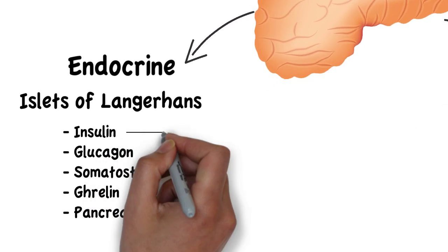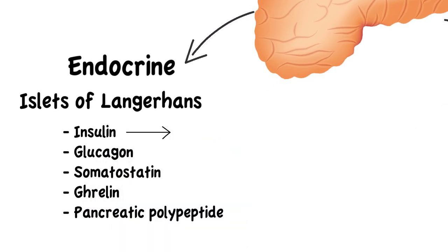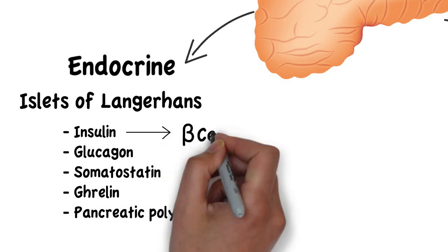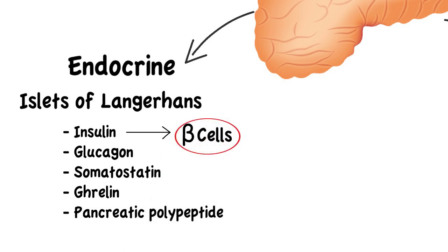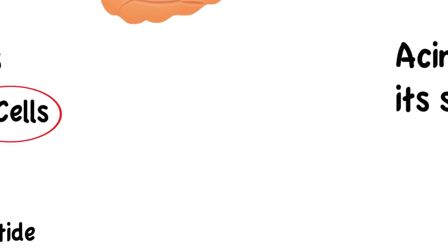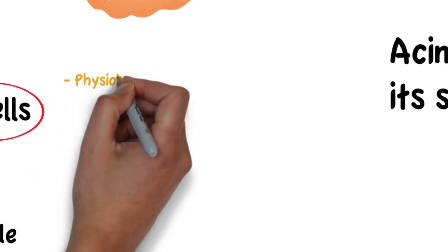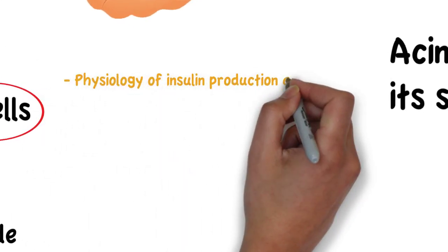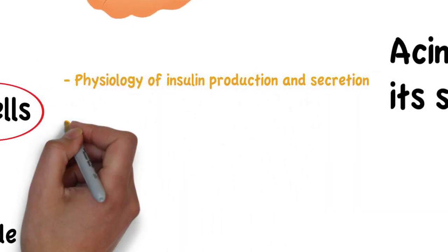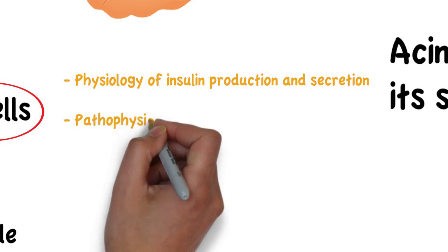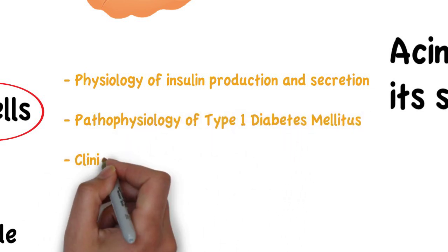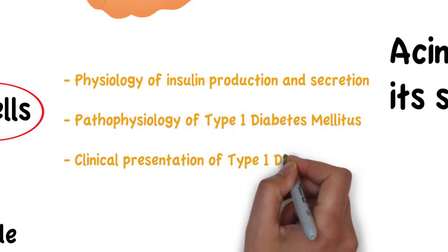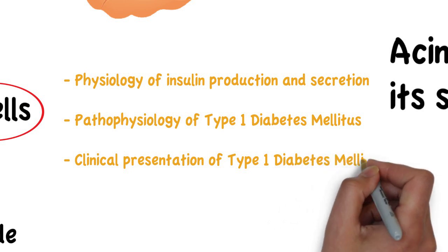The cells that secrete insulin are the beta cells and they are the focus of this video. Firstly, we will understand the physiology of insulin production and secretion, and then the pathophysiology of type 1 diabetes and the common clinical presentation of such.